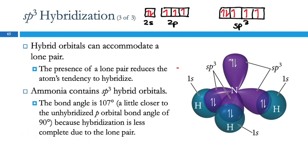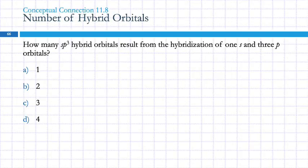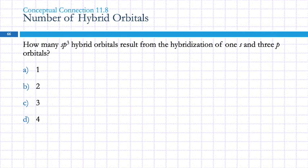Valence bond theory explains that because the hybridization is going to be less complete due to the lone pair. If I take one s and three p orbitals and average them together, how many orbitals will I end up with? The same number I started with — 1 plus 3 equals 4 orbitals. When I hybridize them, I don't change the number of orbitals. In the hotel analogy, the number of beds stays the same; all we're doing is moving walls and changing prices.